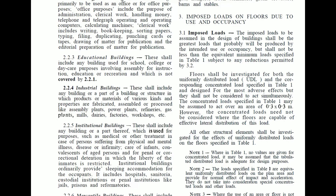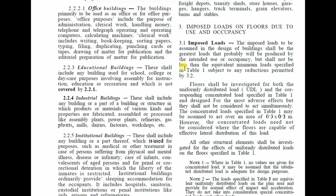Let's start with IS 875 Part 2, Clause 3 — imposed load on floors due to use and occupancy. According to the usage and occupancy of the structure, the live load will keep varying. As given in Clause 3.1, the imposed load to be assumed in the design of a building shall be the greatest load that will probably be produced by the intended use or occupancy, but shall not be less than the equivalent minimum load specified in Table 1, subject to any reduction permitted by Clause 3.2.